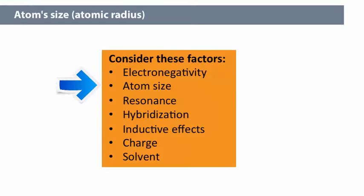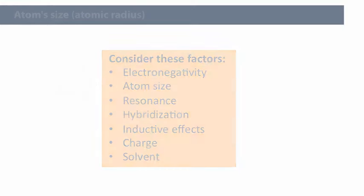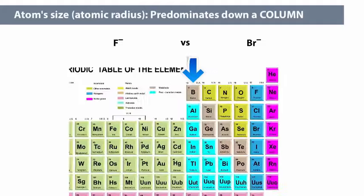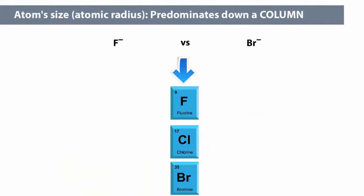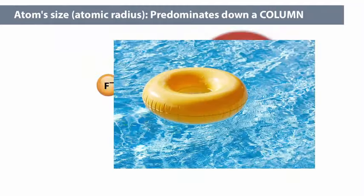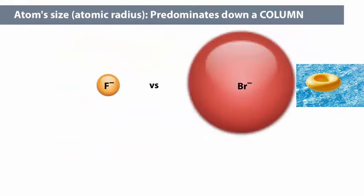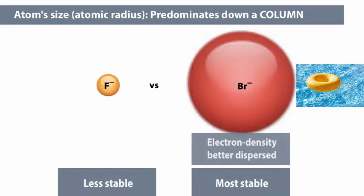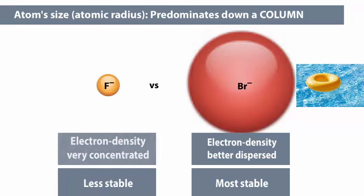Next, let's look at the effect of an atom's size. If we have two bases in the same column of the periodic table, atomic size, or radius, is the factor that most strongly influences their stability. It's a little bit like floating on a lake. The species will be more stable with a negative charge on a larger anion that can better disperse the electron density than in a smaller anion where the electron density is concentrated in a much smaller volume. Larger anions are more stable than smaller anions.